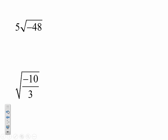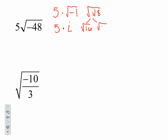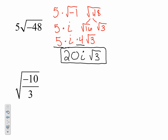A couple more like this. We're going to rewrite 5 times the square root of negative 48. Break it down: 5 times square root of negative 1 times square root of 48. The greatest common factor that goes into 48 is 16, and 16 times 3 equals 48. So we have 5 times i times square root of 16 times square root of 3. Square root of 16 is 4. Combining: 5 times 4 is 20, giving us our answer: 20i square root of 3.